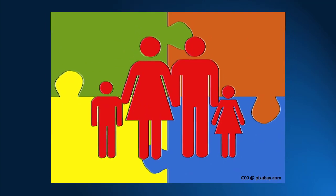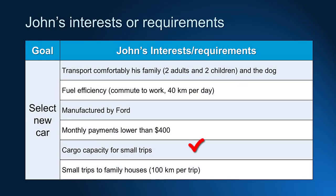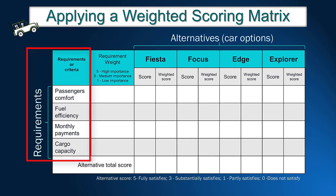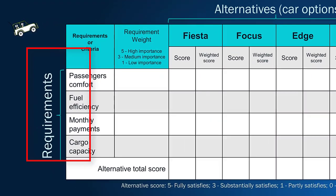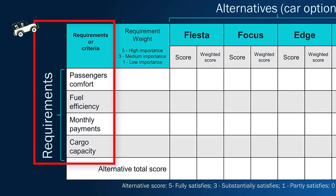Let's see who is involved in the decision: John, his wife, a 10-year-old boy, a 7-year-old daughter, and a dog. John needs a car to drive every day to work, and monthly they visit relatives that live 100 kilometers away — it is just a day trip. The first step is to create a table with the requirements and possible alternatives. The requirements are listed in the first column. We summarized John's needs into four major requirements: passenger comfort, fuel efficiency, monthly payments, and cargo capacity.